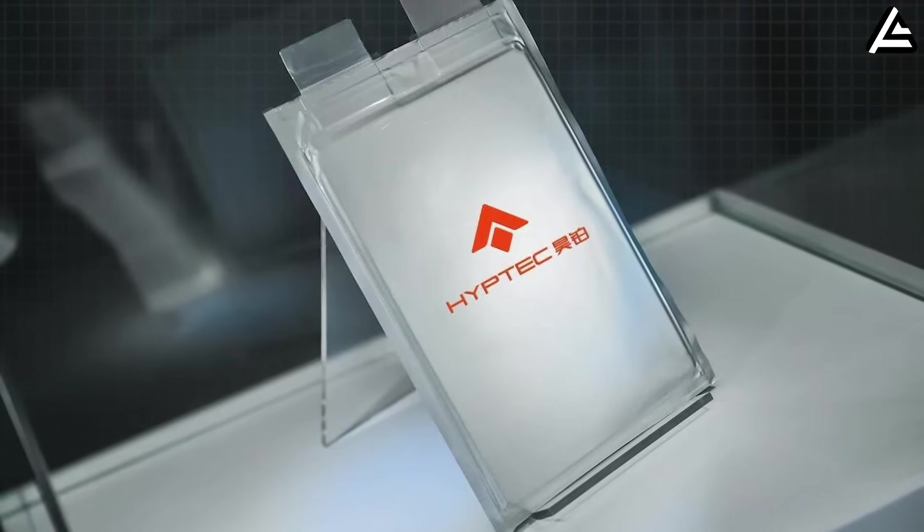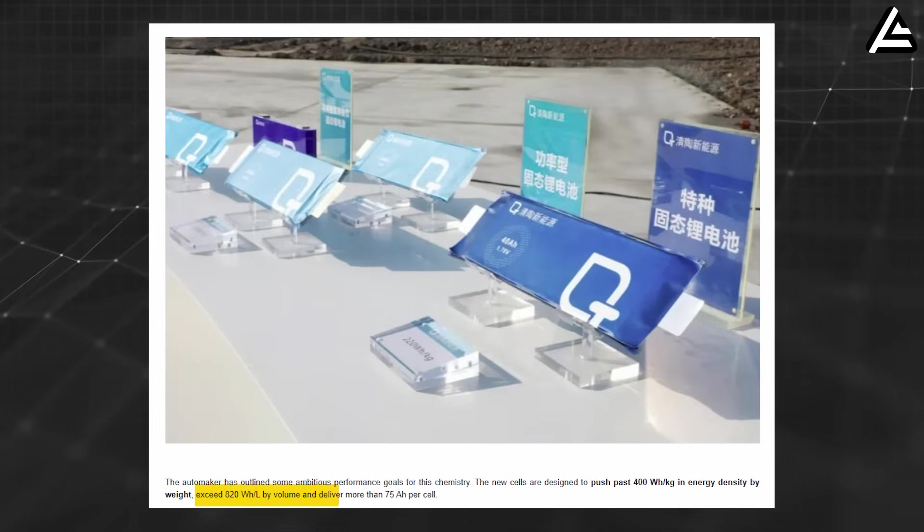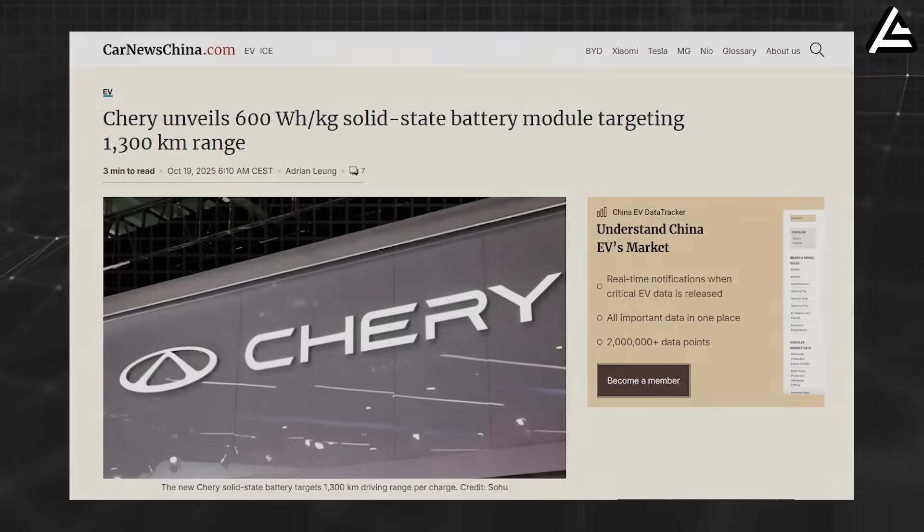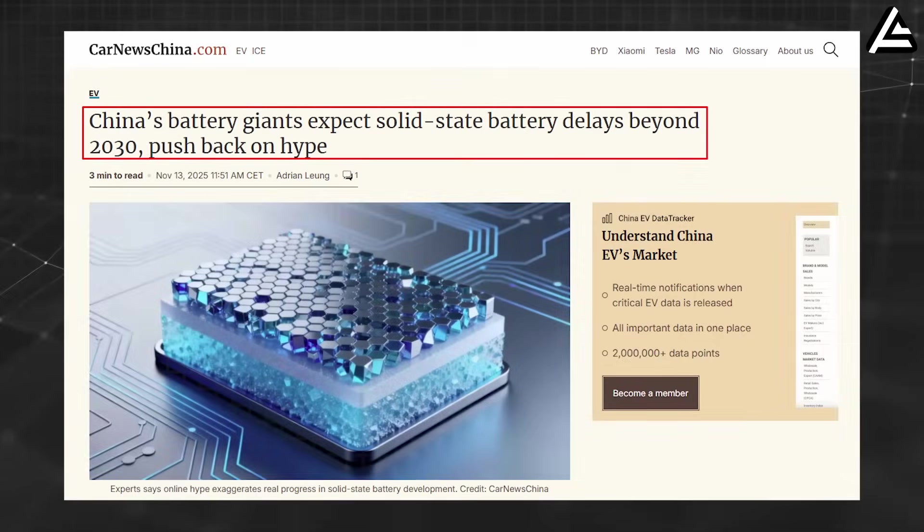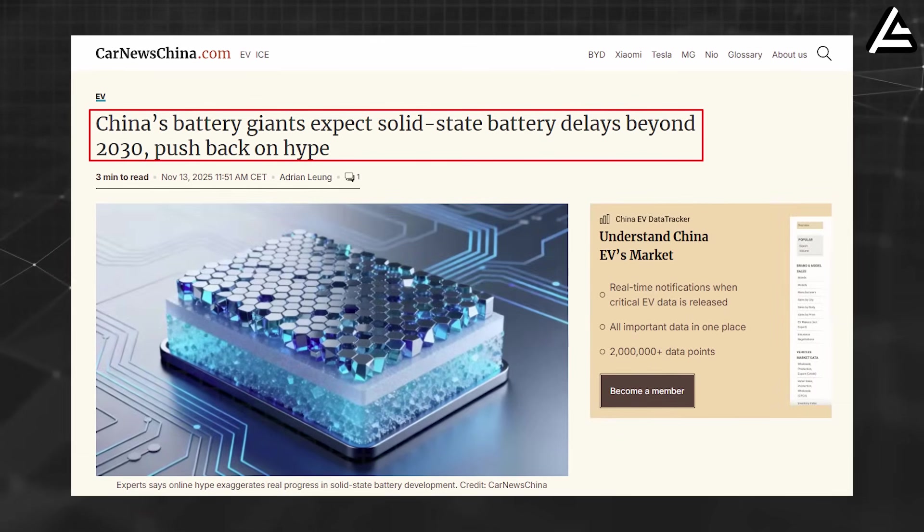GAC now leads with an active production line making 60 Ah cells, while CAC targets even larger 75 Ah units for long-range EVs. Sherry is aiming for a 600 watt-hour per kilogram module, the highest target in the group, and CATL maintains that true large-scale commercialization won't arrive until around 2030.